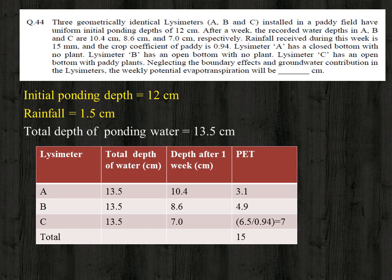For lysimeter B (open bottom, no plants), even though it has an open bottom, there is no groundwater contribution or boundary effects. So the water loss is only due to evaporation: potential ET from lysimeter B = 13.5 − 8.6 = 4.9 centimeter.